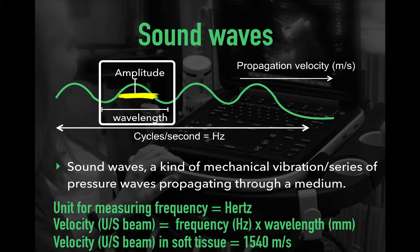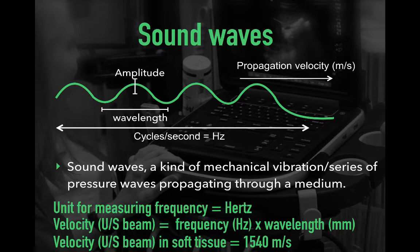Amplitude refers from average to maximum or minimum and is measured in decibels. Amplitude helps define the brightness of the image and is the ultrasound equivalent of loudness. Interestingly, the amount of reflected energy picked up by the transducer is only a small fraction of the initial strength of the emitted ultrasound wave, as the wave undergoes a process called attenuation. Other features include power — proportional to amplitude squared — and intensity, which is power over the beam cross-sectional area.